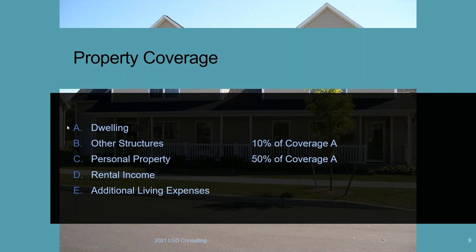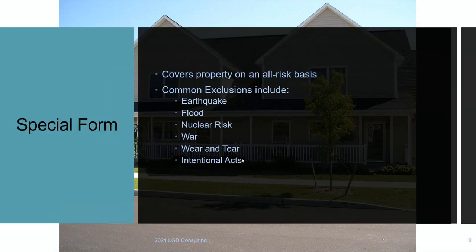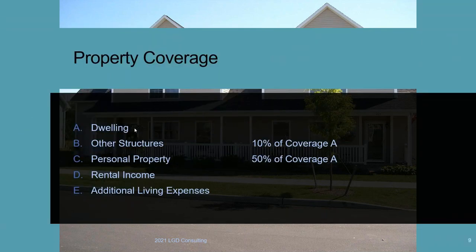You need to know what Coverage A, B, and C are on a dwelling policy. Coverage B is automatically 10% of Coverage A; Coverage C is 50% of Coverage A. This is a detail-heavy test — you have to memorize these parts. Anything bolted, welded, nailed, or attached to the structure is Coverage A or B. If you flip the house upside down and something falls, that's Coverage C.